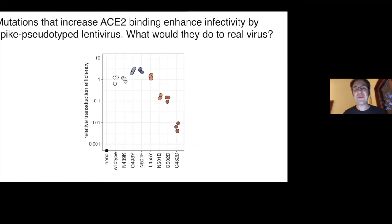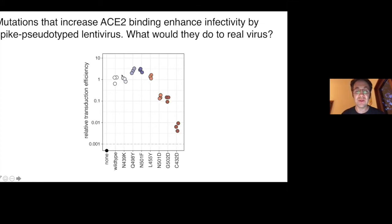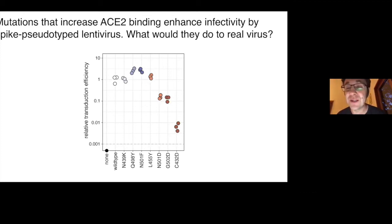One thing we found in that map is there are actually some mutations to the SARS coronavirus 2 receptor binding domain that make it bind to human ACE2 even better than current SARS coronavirus 2 does. We tested these along with a variety of other mutations in pseudotype lentiviral particles. The two mutations with the biggest effect on increasing ACE2 binding—Q498Y and N501F—both increase infection of cells by the pseudotype lentivirus a little bit, whereas mutations bad for ACE2 binding generally decrease infectiousness of these lentivirus pseudotypes by a large amount.